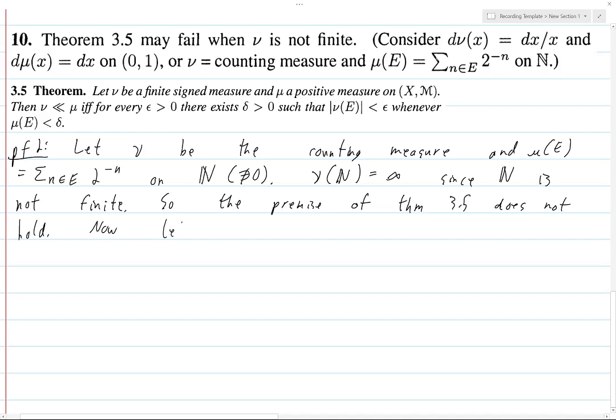Now, let epsilon be greater than 0. Note that sum from N equals 1 to infinity of 2 to the minus N, it's just 1 half plus 1 fourth plus 1 eighth, it's equal to 1. This is less than infinity. I mean, I think. So, anyways, the tail of this series must shrink, so we can choose N in the natural numbers large enough,